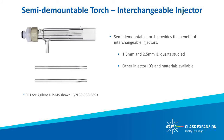Although a semi-demountable torch is not included with our single cell sample introduction system, it does provide an additional benefit of optimizing ICP-MS performance with interchangeable semi-demountable injectors using a single torch. In the final steps of our optimization report, we examine the benefits of using a 1.5 mm ID versus a 2.5 mm ID injector. Many ICP-MS instruments now ship with a semi-demountable torch as standard configuration. Glass Expansion manufactures many semi-demountable torch designs for instruments that do not have a standard semi-demountable torch option.